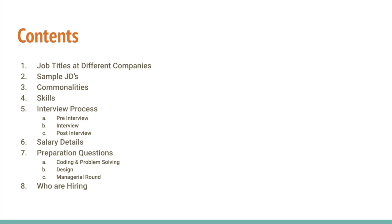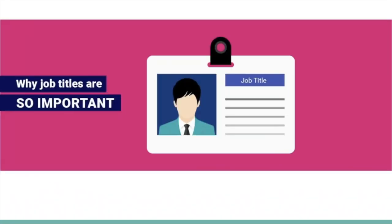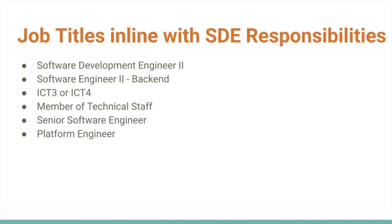Let's start with why job titles are important. Similar to SDE2 or software engineer, the responsibilities remain the same but the job title differs from company to company. Titles include Software Development Engineer 2, Software Engineer with back-end experience, IC T3 or IC T4, Member of Technical Staff or Senior Member of Technical Staff, Senior Software Engineer, and Platform Engineer. This SDE2 job family falls in the mid-to-senior level category, with an experience range of 3.5 to 7 years.